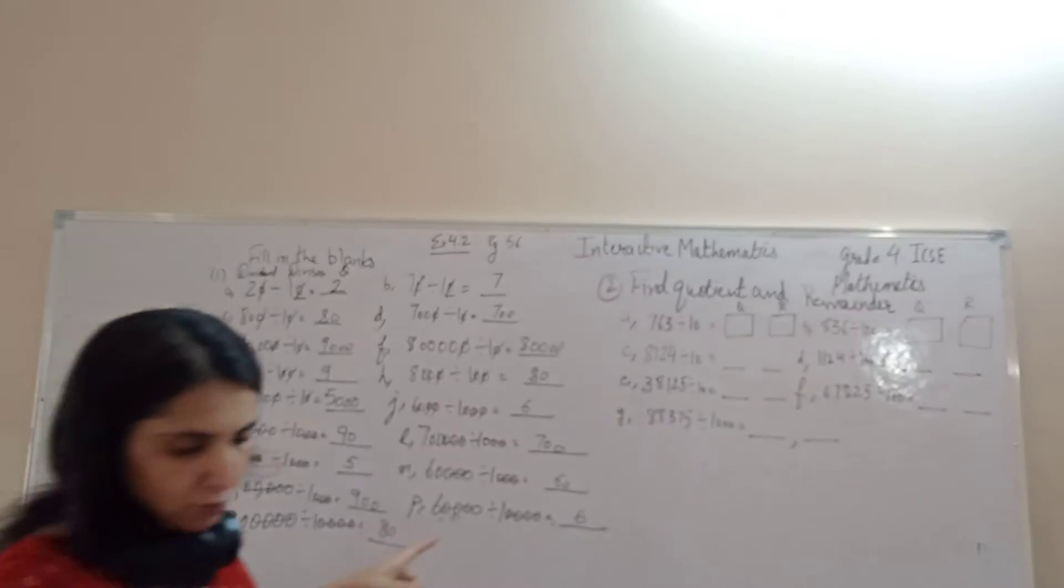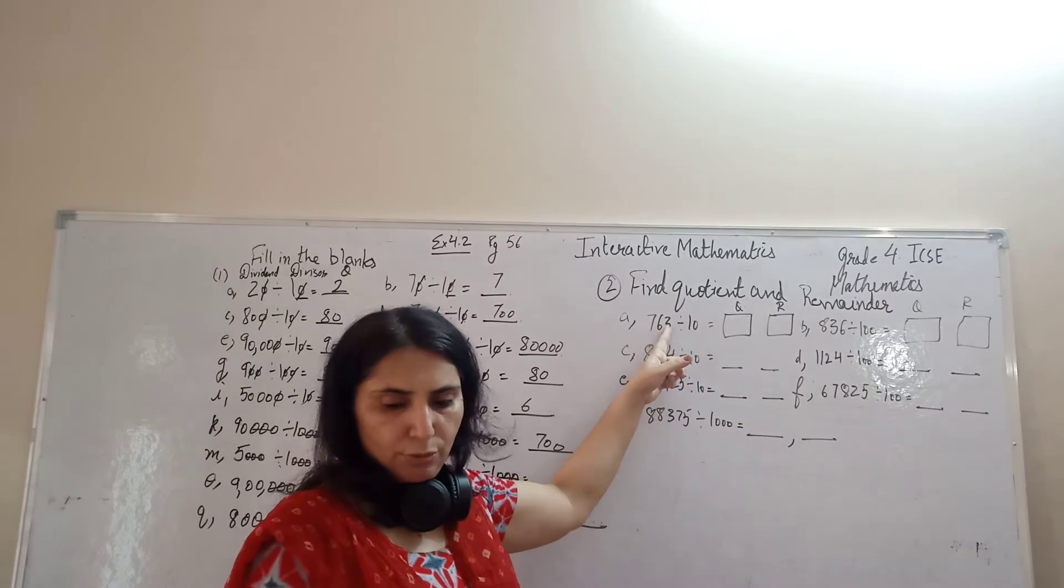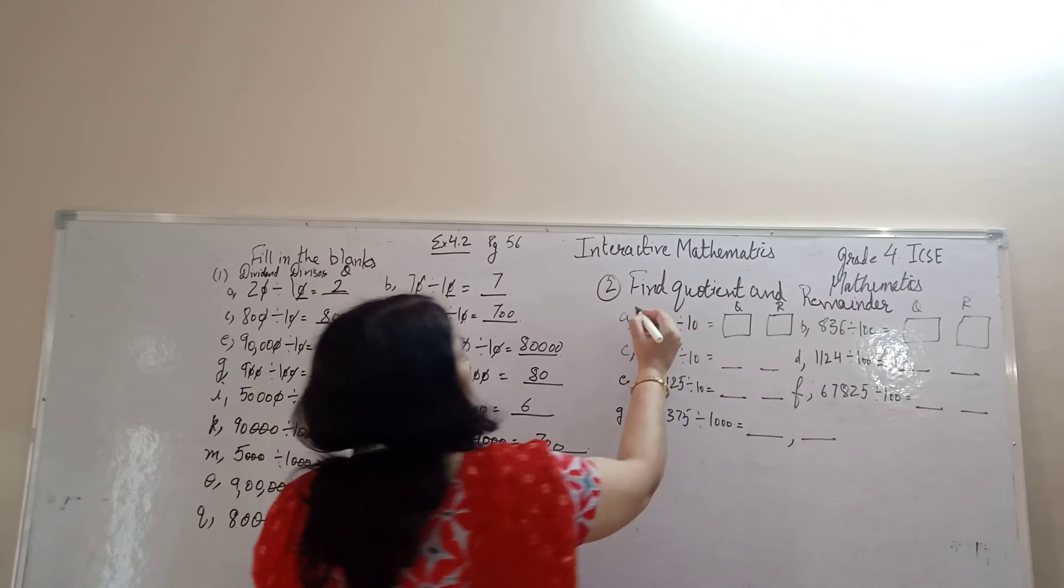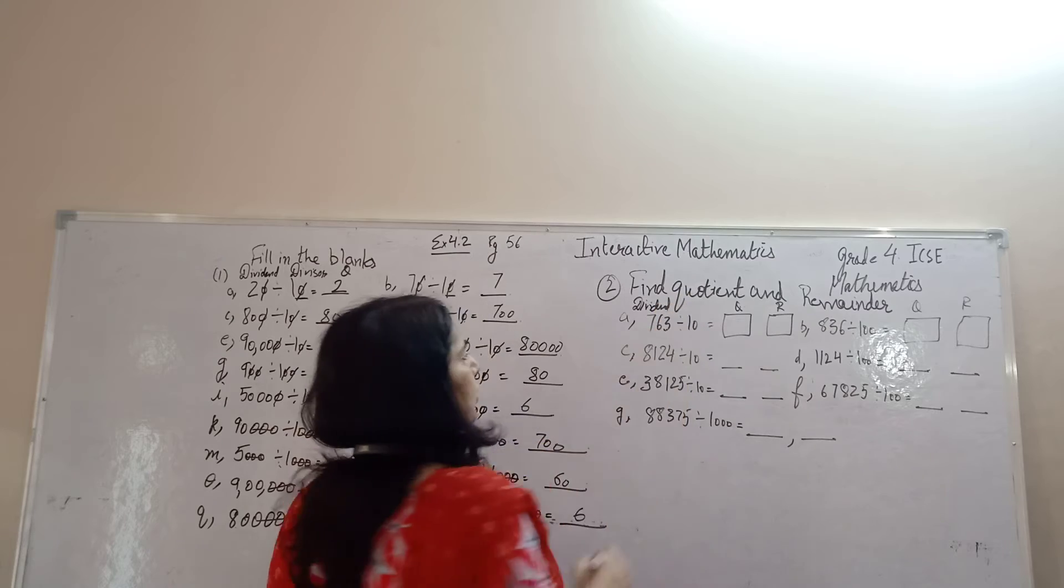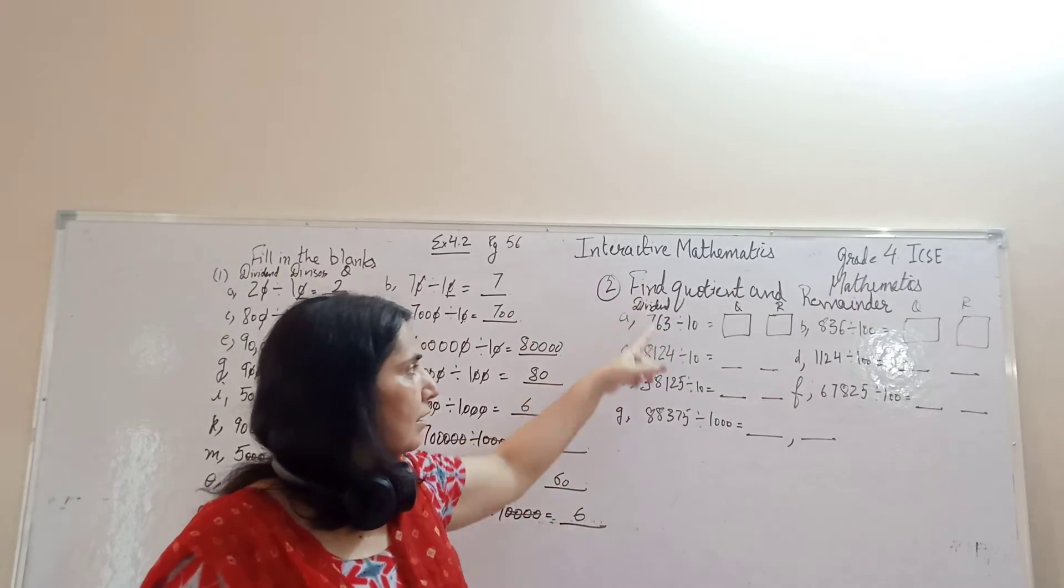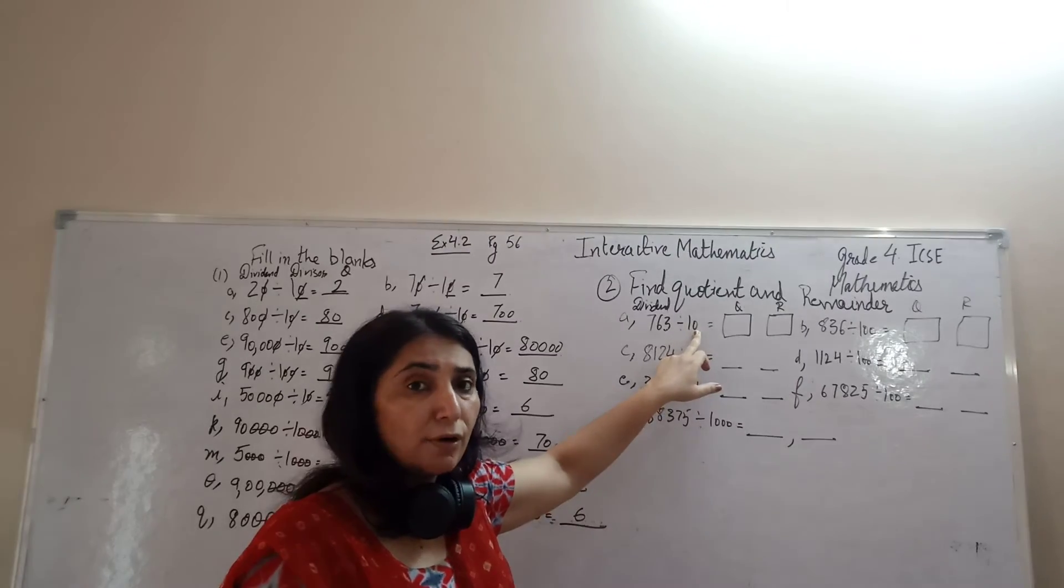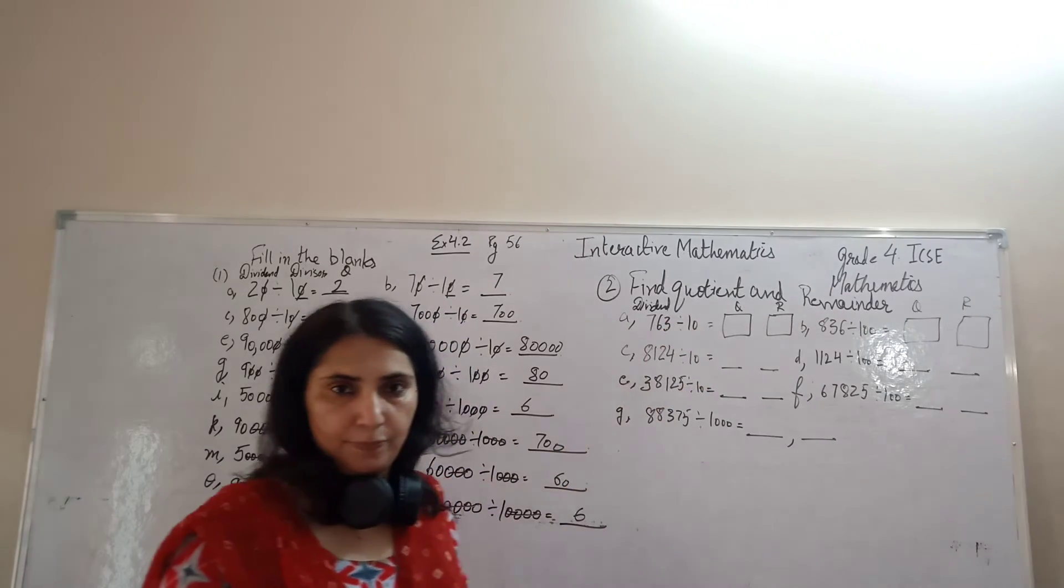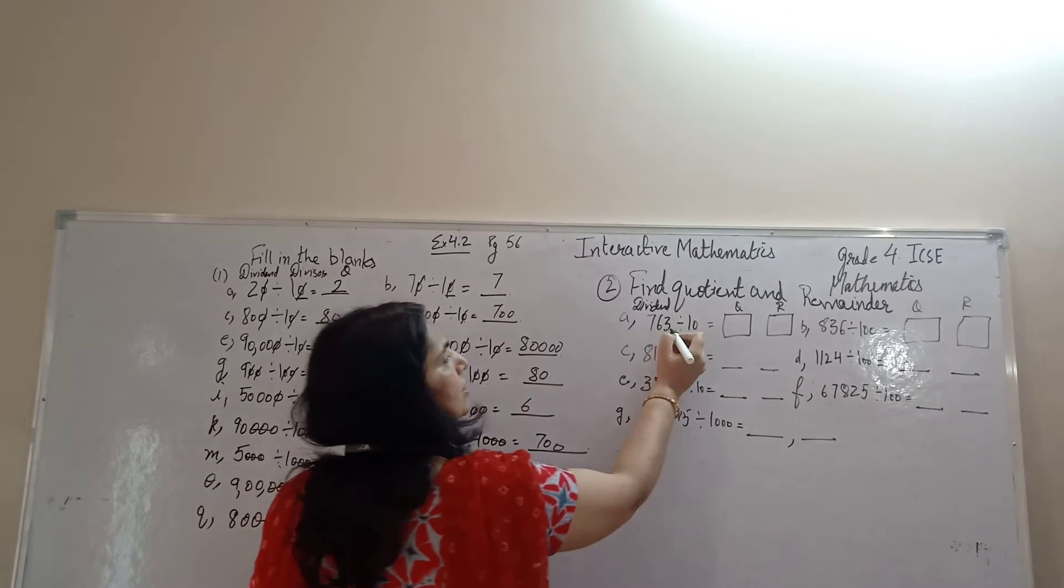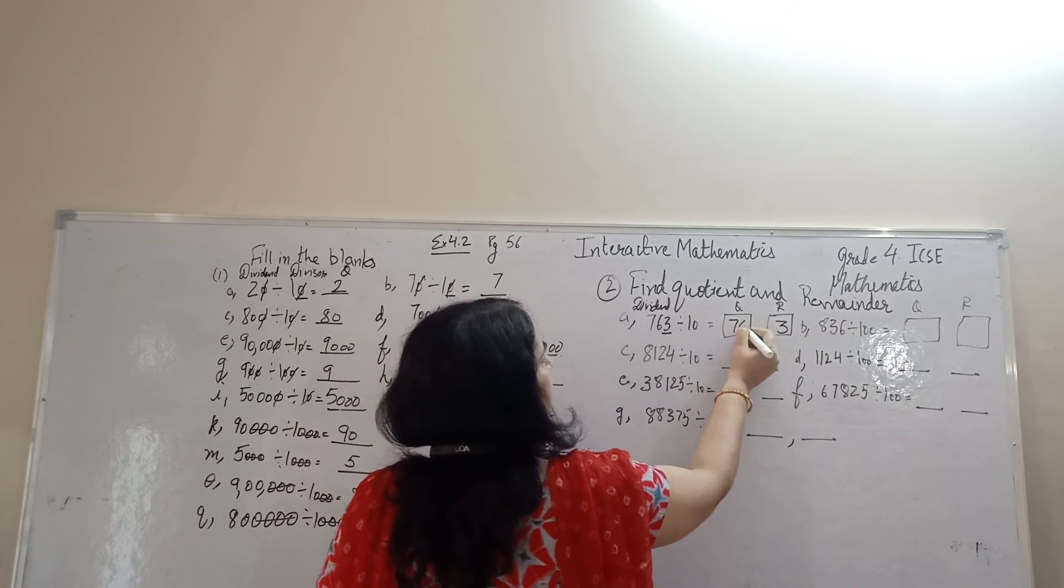Now, in question number 2, we have to find quotient and remainder. 763 divided by 10. Now, here your dividend is 763, 8124, 38125. They are not multiples of 10. Simply what we have to do, we will count the number of zeros in our divisor. Number of zeros in divisor is 1. So, last 1 digit starting from the ones place will be our remainder. Rest is quotient.